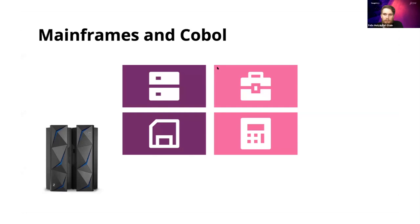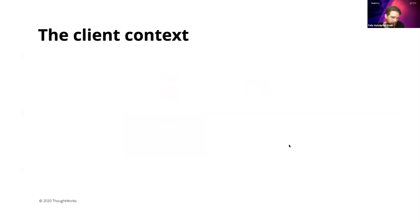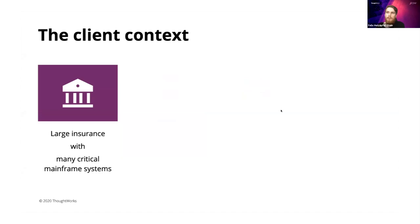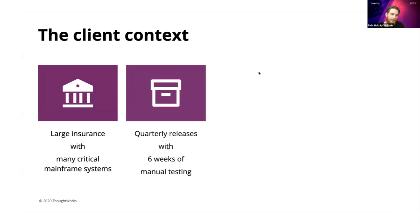Knowing that we're dealing with systems compatible with really old systems and made for business problems, it's time to look into the business context we found ourselves in — our client context. Our client is a large insurance company that still had many critical systems running on the mainframe, developed for more than 30 years. That meant for the client that the release cycles were, by modern measures, still quite big. We had quarterly releases with six weeks of manual testing every release, which is already pretty good for mainframe systems built in that era.